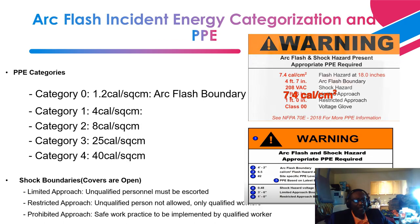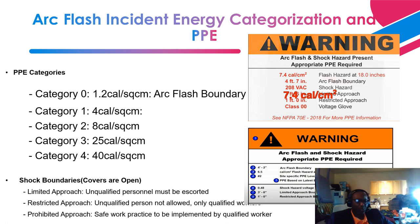Now let's talk about Arc Flash incident energy categorization and required PPE. After completing all modeling and simulation — first the short circuit simulation, then the Arc Flash analysis — you categorize based on incident energy. Category 0 is up to 1.2 cal/cm², Category 1 is up to 4 cal/cm², Category 2 is up to 8 cal/cm², Category 3 is up to 25 cal/cm², and Category 4 is up to 40 cal/cm². Based on your simulation results, if your incident energy is less than 4 cal/cm², your PPE categorization is Category 1.